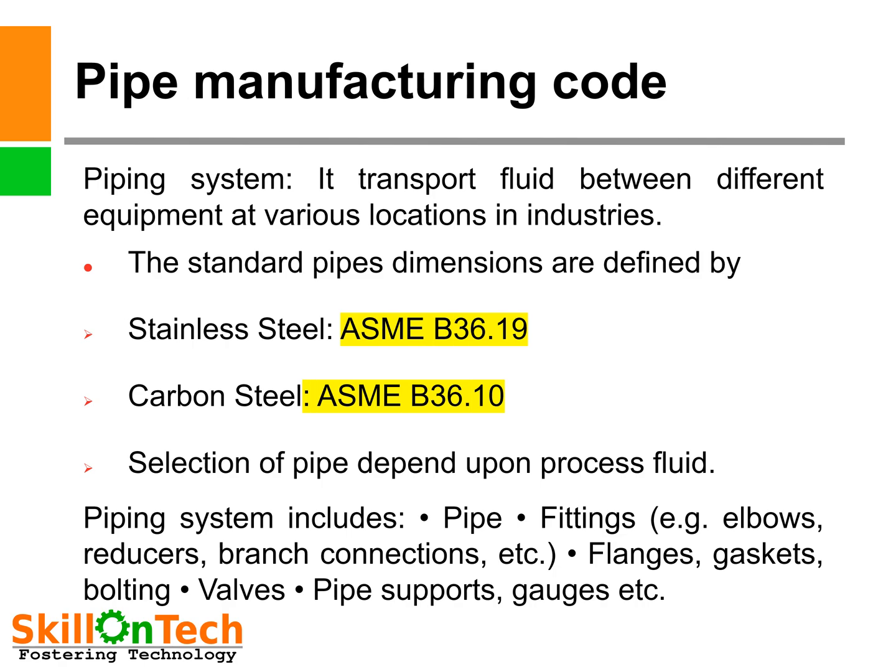Piping system includes pipes and fittings such as elbows, reducers, branch connections, flanges, gaskets, fasteners, valves, pipe supports, gauges, etc.